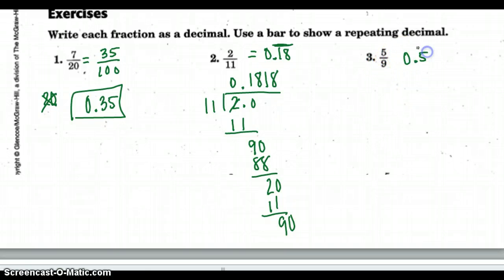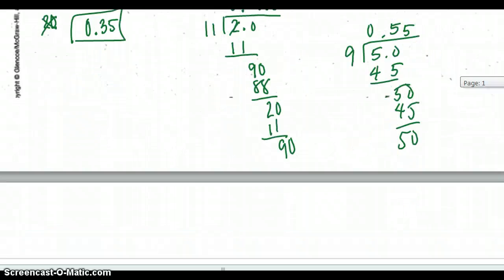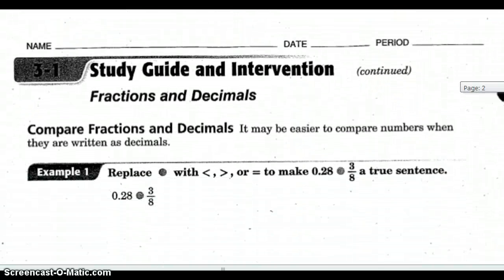This is going to be 0.5 repeating because it's divisible by 9. If you don't believe me, we can check it. 9 goes 5 times, which is 45, which gives us a 50, which will go 5, which is 45, which will give us a 50, and you can see how that pattern keeps going. I always like it when you circle or put a box around your answers.